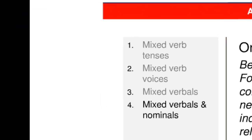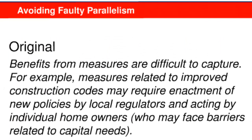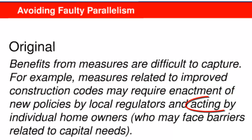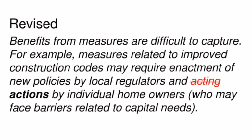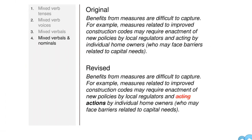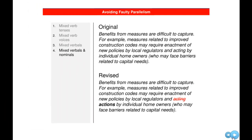The fourth cause of faulty parallelism is mixing a verbal with a nominal. In the original passage from the report, the phrase Enactment of new policies is a nominal, coordinated with Acting by individual homeowners, which is a verbal in the form of a gerund. The faulty parallelism is fixed in the revised version by changing the gerund into a nominal, so the two pieces of information now have parallel structures. Parallelism won't help the writer inform the audience, but it will make it more efficient for the audience to get the message.